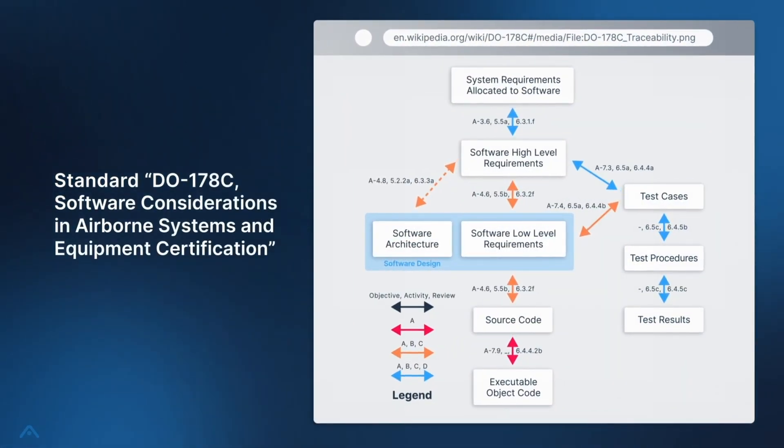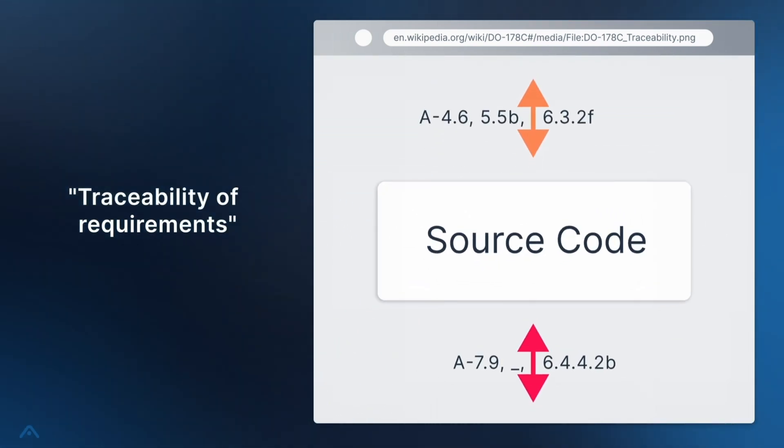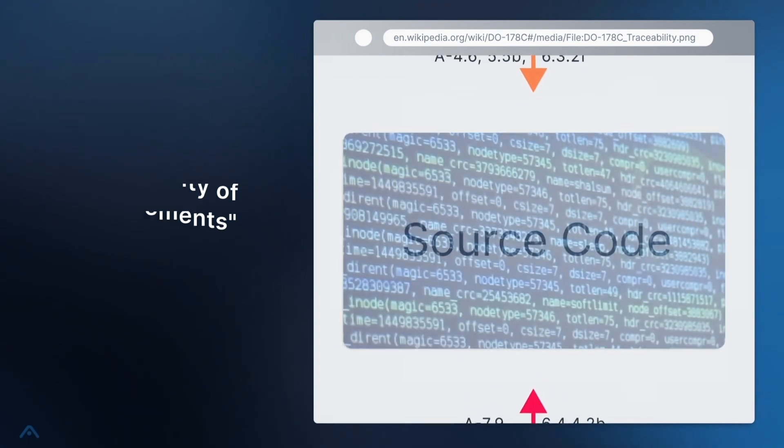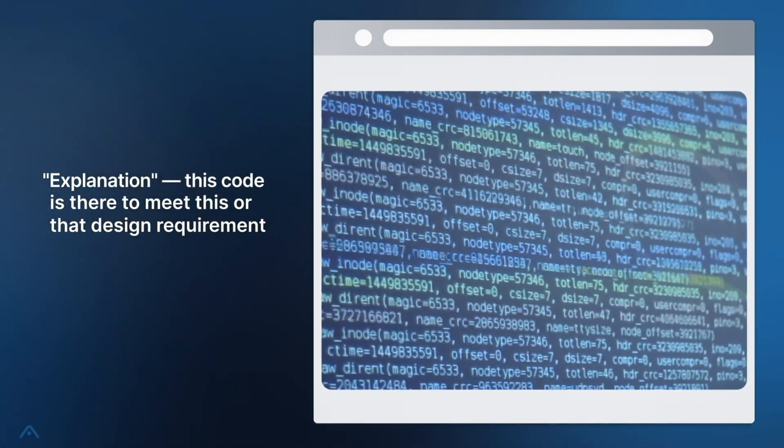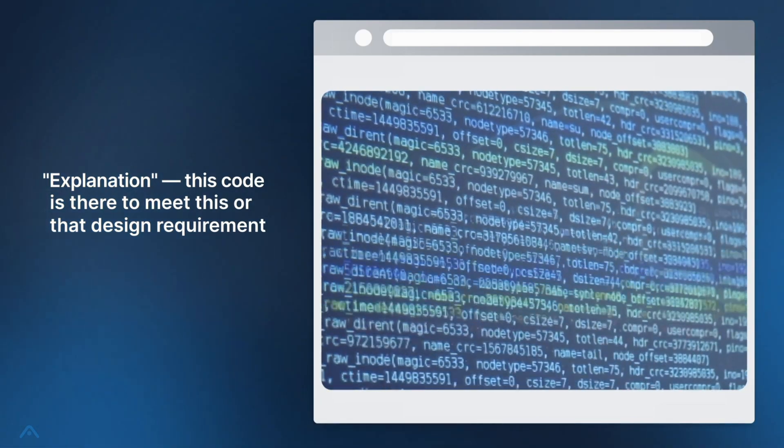In aerospace, regulations prescribe that such systems come with evidence that they do what they are supposed to and don't do things that might be dangerous. A key concept is the traceability of requirements. Tracing the links up and down the hierarchy of requirements gives us an explanation for every bit of code.